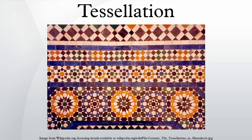In Latin, tessella is a small cubical piece of clay, stone or glass used to make mosaics. The word tessella means small square. It corresponds with the everyday term tiling, which refers to applications of tessellations, often made of glazed clay.